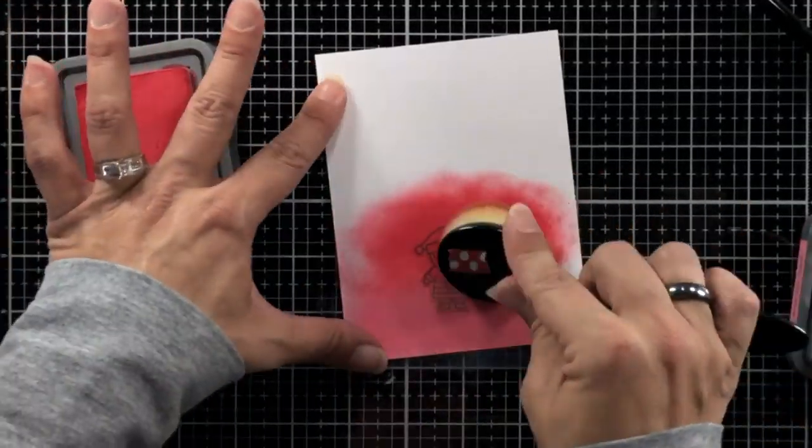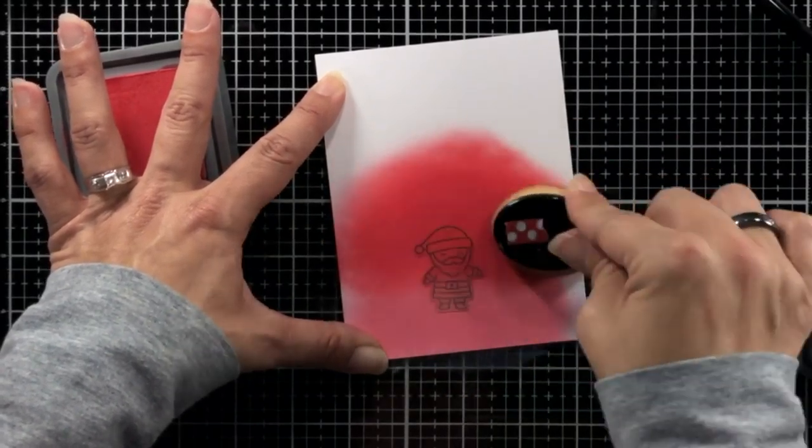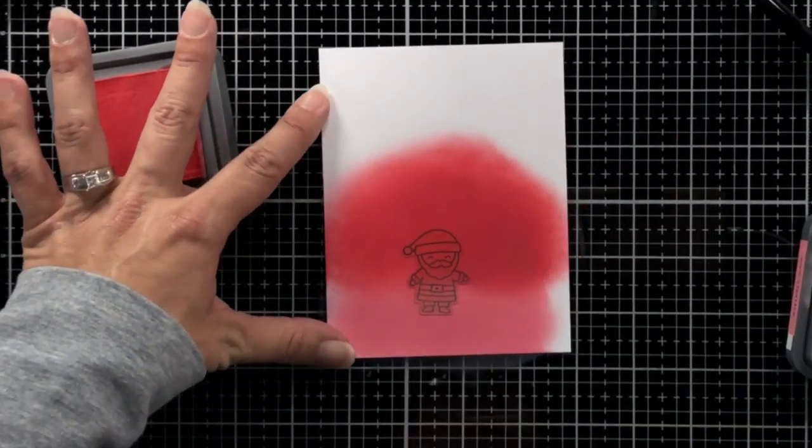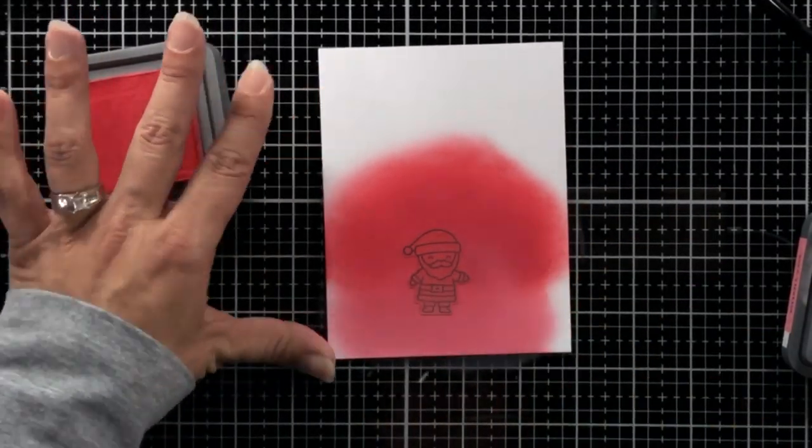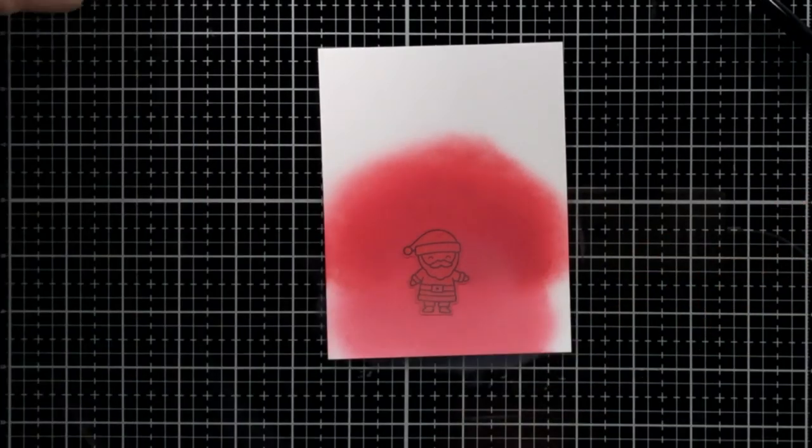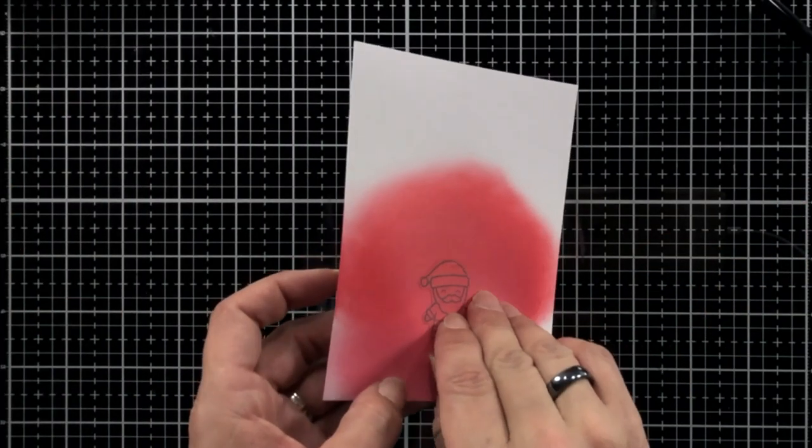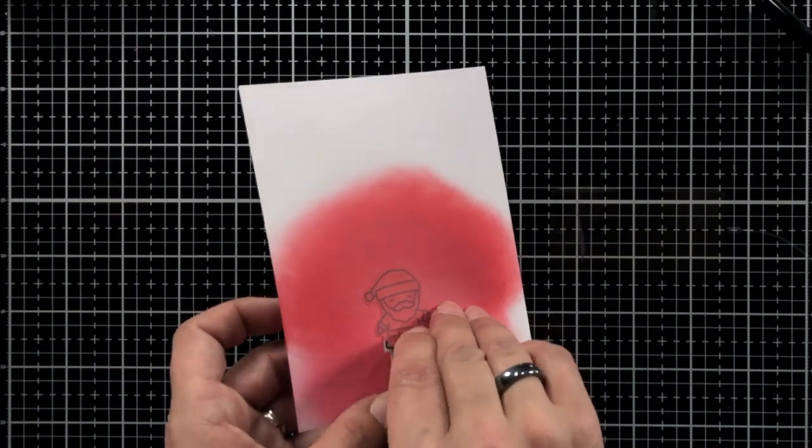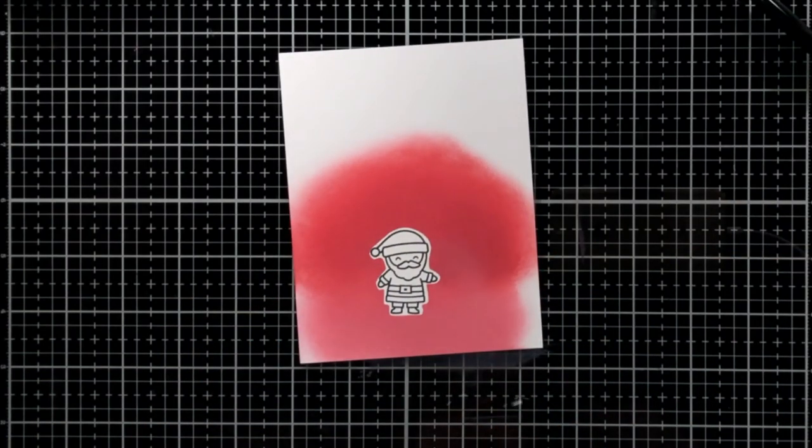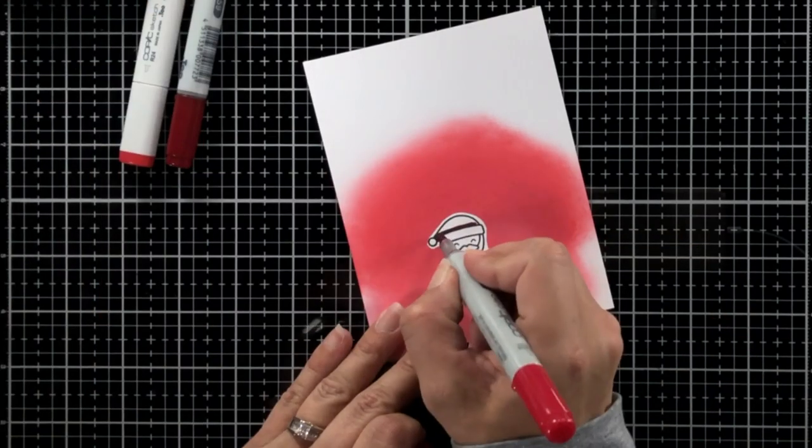Once my ink blending is done and I remove the mask, I'm going to start Copic coloring my Santa image and I am going to use the same colors that I did on the Mrs. Claus. I love removing that mask and I love that white edge. It really works with the rest of my card.